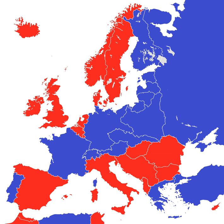Britain followed a different model in the Middle East, installing local monarchies in several colonies and mandates including Iraq, Jordan, Kuwait, Bahrain, Oman, Yemen, and Libya. In subsequent decades revolutions and coups overthrew a number of monarchs and installed republics. Several monarchies remain, and the Middle East is the only part of the world where several large states are ruled by monarchs with almost complete political control.